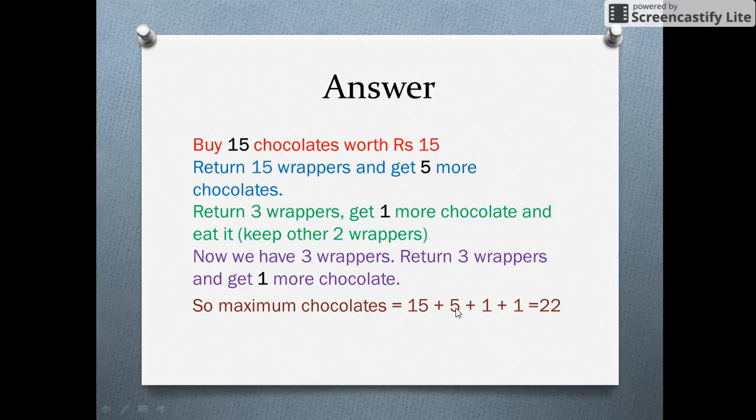The remaining 2 wrappers plus the remaining wrapper of this chocolate gives you 1 more chocolate. So, in total, you have 15 plus 5 plus 1 plus 1, that is 22 chocolates.